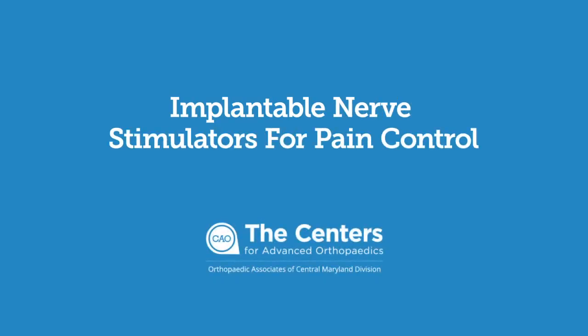Implantable nerve stimulators are an innovative treatment for chronic nerve pain. Classically, they are implanted onto the spinal cord within the spinal canal, but newer technology allows them to be placed on peripheral nerves or nerve roots to achieve adequate coverage of pain relief.